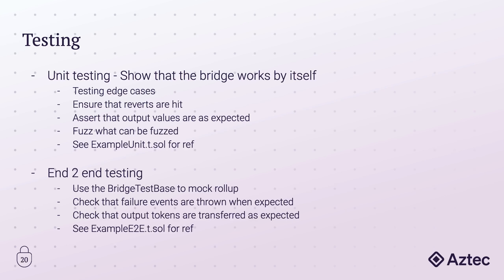For testing, we have two stages: unit testing and end-to-end testing. Unit testing shows that the bridge works by itself — you test edge cases, check that all the reverts are hit, verify output values are what you expect, and check that fuzz values can be fuzzed. Go look at the example unit.t.sol for reference. For end-to-end testing, you can use our bridge test base to mock rollups and execute the DeFi action, then check that the events from the DeFi action are thrown when you expect them to and that the output is actually transferred as expected. We have an example end-to-end test for reference.